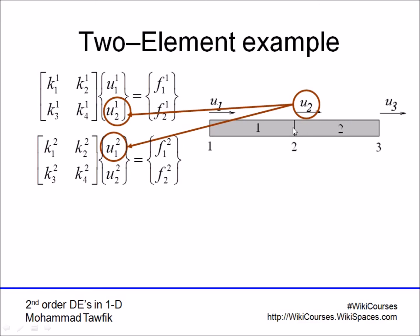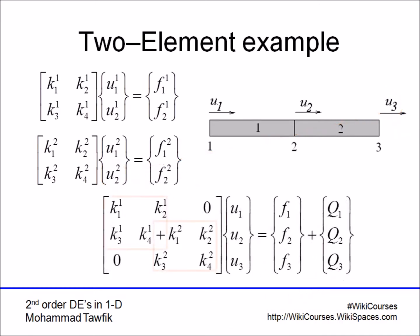They must be the same—there cannot be an abrupt change in the value of u from the same point on one element to the same point on the other element. Finally, u₃ is the second value of u for the second element.